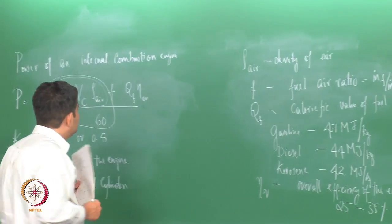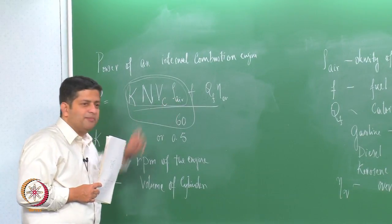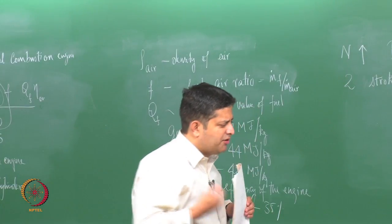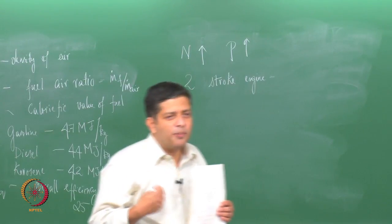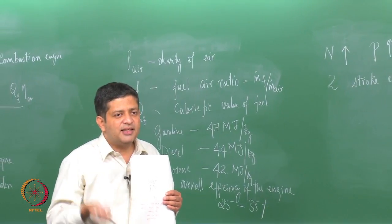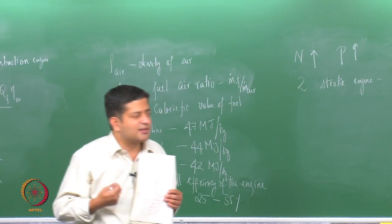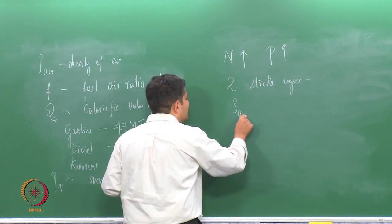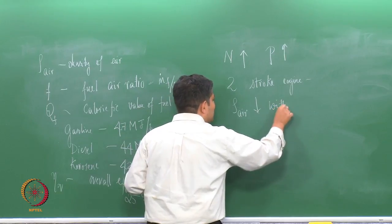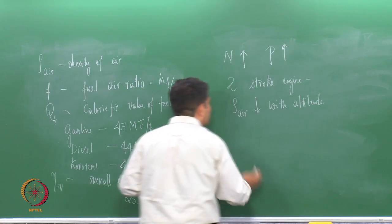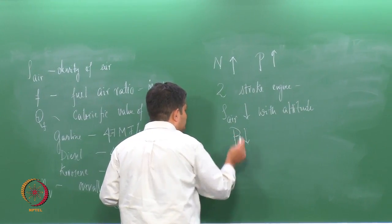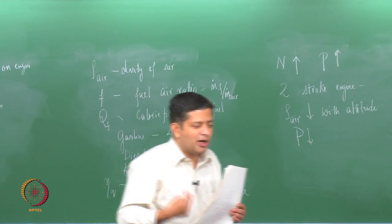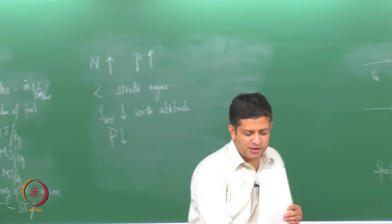The other possibility of increasing power is by looking at the density of air. The density of air at sea level is around 1.2 kg/m³. One of the problems faced by aircraft operating with piston engines was that as the altitude increased, the density of air decreased, and as the density of air decreases, power also decreases. As rho_air decreases with altitude, power also decreases, and this was one of the major problems faced by initial designers. They were able to overcome this problem by the use of something known as turbo supercharging.